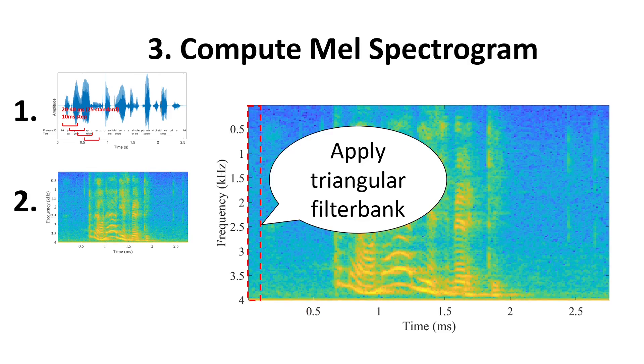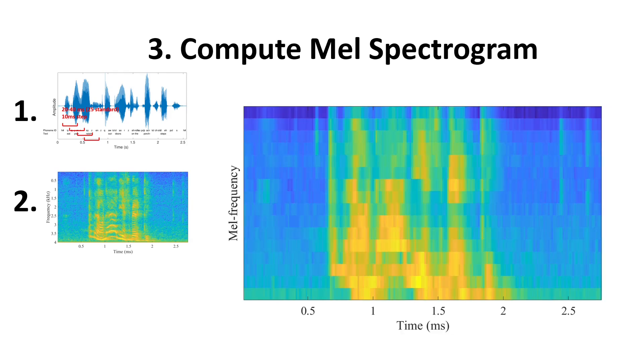Then, on each window, we apply the triangular filter bank as presented before, and obtain the mel spectrogram of the signal. We can see that this variant is much smoother than the simple spectrogram.